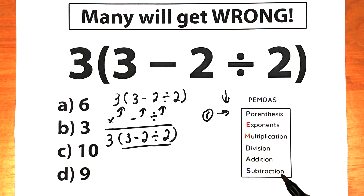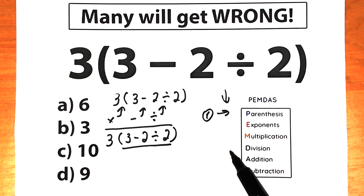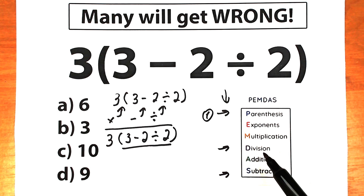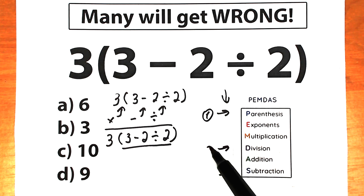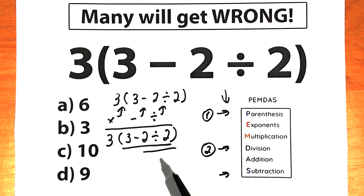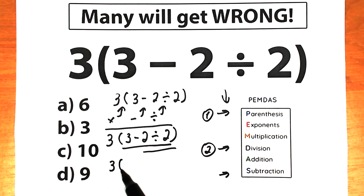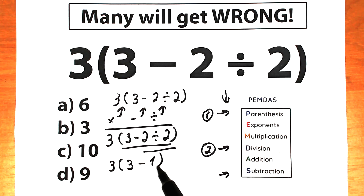As I said, PEMDAS works from the top to the bottom — higher position means higher priority. Division has a higher position than subtraction, so division has higher priority. Our second step, after handling parentheses, is division. We divide 2 by 2, which gives us 1. So now we have 3 times, and inside the parentheses we have 3 minus 1.